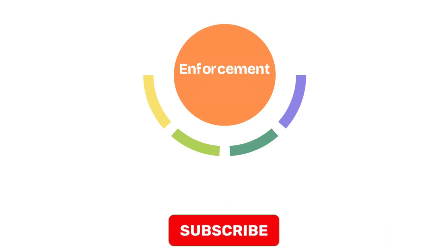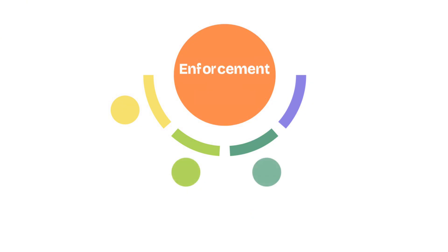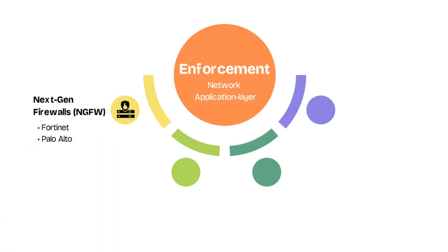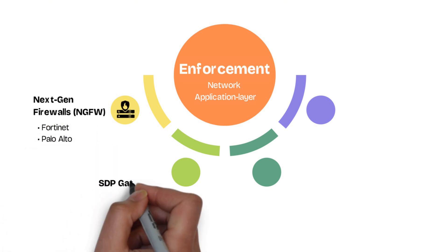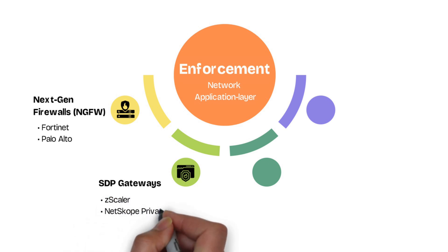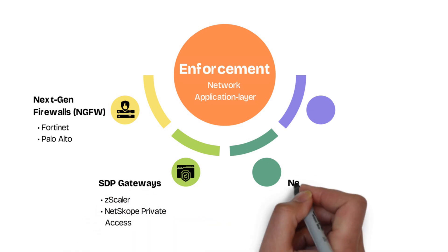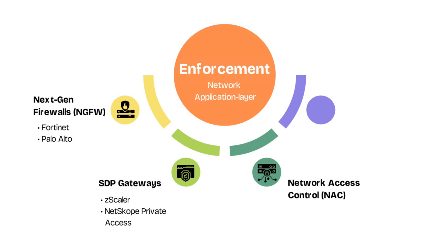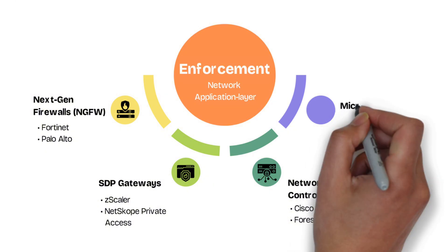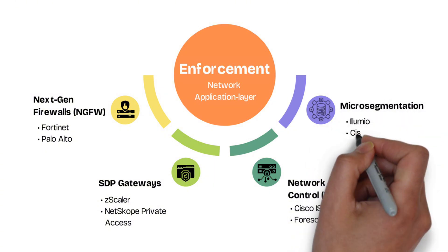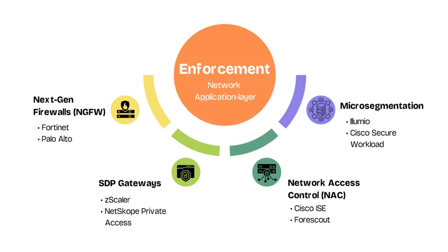For resources that live inside a traditional data center or campus network, the enforcement point typically consists of a network or application layer device deployed in line within the traffic. This might include a next-generation firewall, or NGFW, such as Fortinet or Palo Alto. This may also include STP gateways such as Zscaler or Netskope's private access. Network access controls can also work as an enforcement point — a typical example could be a Cisco ISE or ForeScout appliance. Additionally, micro-segmentation solutions such as Illumio or Cisco Secure Workload can also act as a policy enforcement point.